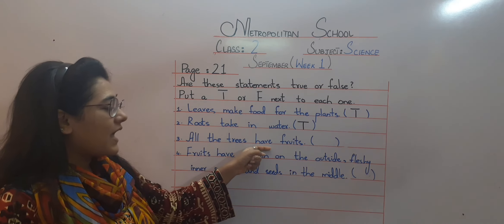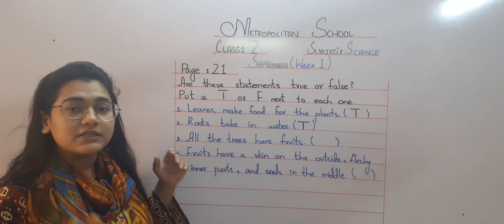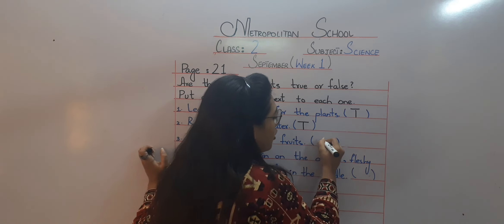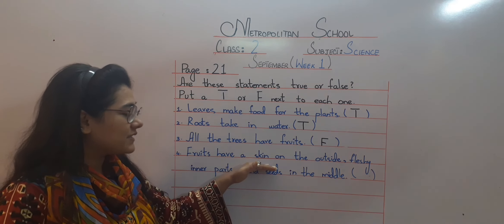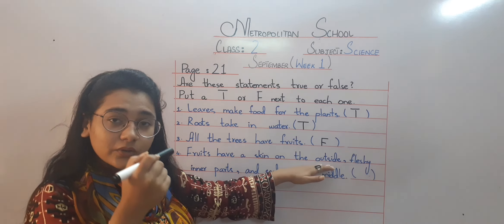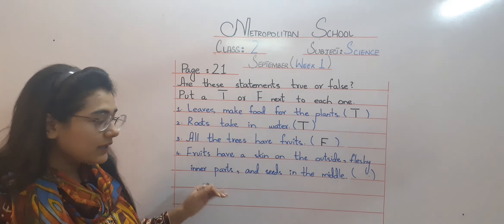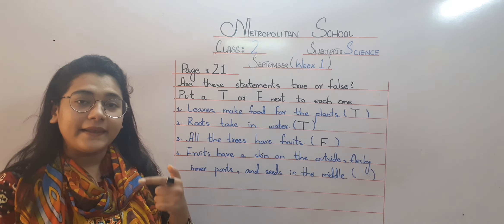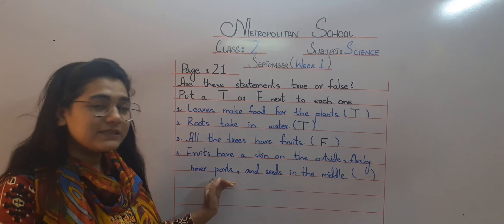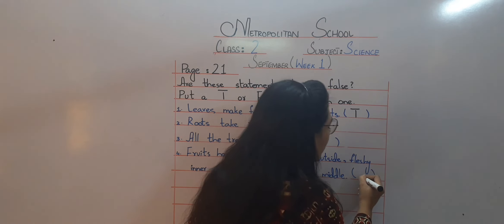Number three: 'All trees have fruits.' No — we have already mentioned many trees which do not have fruit. So this statement is False. Number four: 'Fruits have a skin on the outside.' Yes — fruits have a skin on the outside, a fleshy inner part, and a seed in the middle. So this statement is also True.